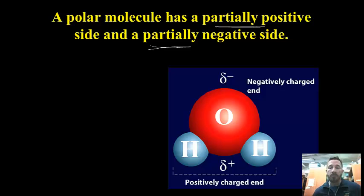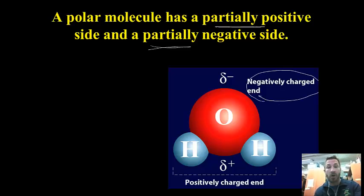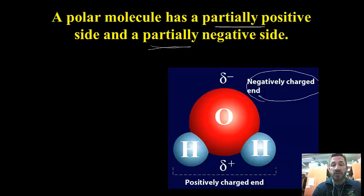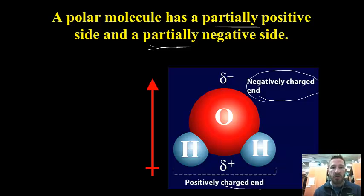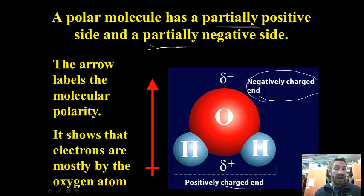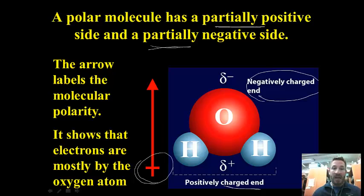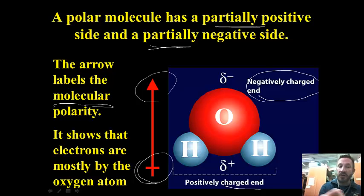Water is an extremely important polar molecule. Water has a negatively charged end where the oxygen is located — oxygen is the second most electronegative element — and a partially positive charged end next to the hydrogen atoms. Another way to indicate this is with an arrow: the positive side of the arrow is next to the positive portion of the molecule and the arrow points to the negative end, labeling the molecular polarity of the whole molecule.